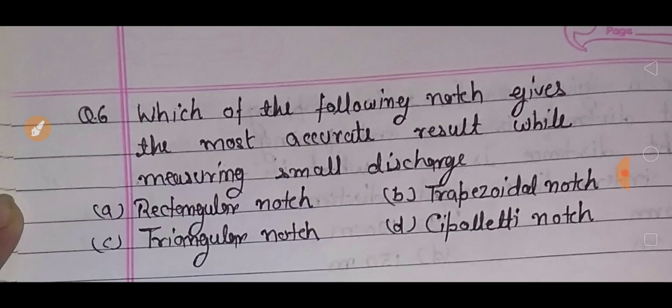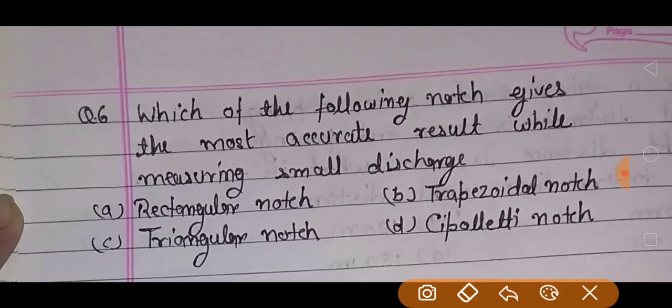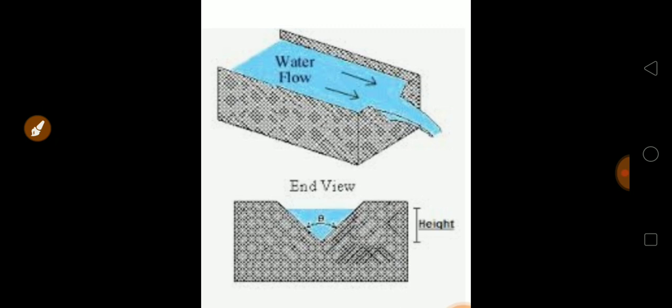लेकिन question में दिया गया है कि जब पानी का discharge small हो, यानि small discharge को accurately इनमें से कौन measure करेगा? तो अपना correct answer है triangular notch. यह देखिए, ऐसी होती है triangular notch जिसमें से पानी निकलता है, पानी इसमें कम हो तो भी यह accurate result देता है.